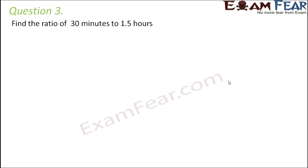Question number 3: Find the ratio of 30 minutes to 1.5 hours. So we have two different quantities. One quantity is 30 minutes. The other quantity is 1.5 hours and we have to find their ratio. Now we know that whenever we are dealing with ratio, the two quantities must be in the same units. So here the unit is minutes. Here the unit is hours. So how do we convert it? We need to convert one of these.